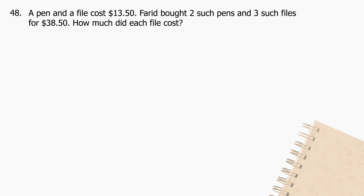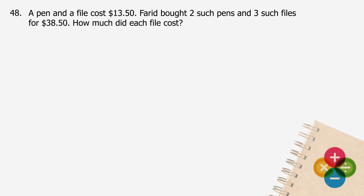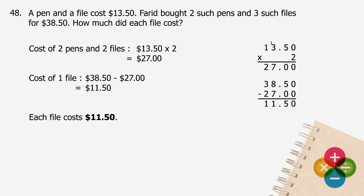Question 48: A pen and a file cost $13.50. Farad bought two such pens and three such files for $38.50. How much did each file cost? The cost of two pens and two files will be $13.50 multiplied by 2 equals $27. The cost of one file will be $38.50 minus $27 equals $11.50. Each file costs $11.50.